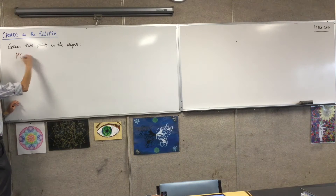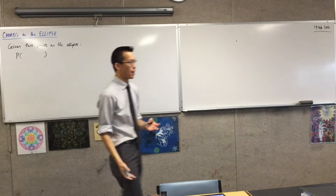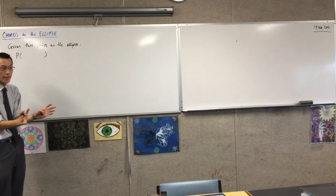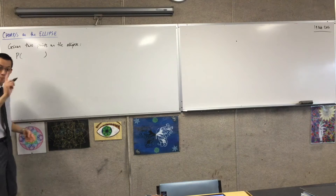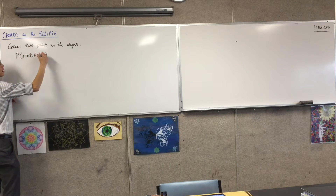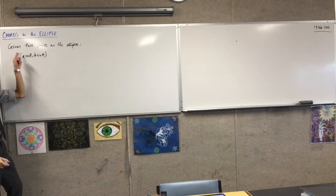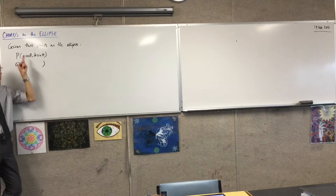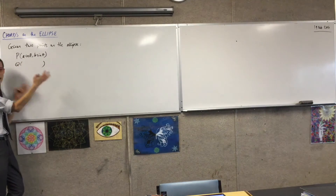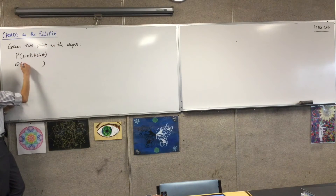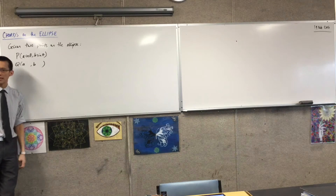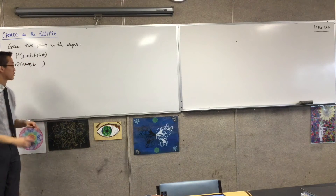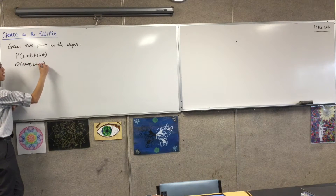We already have some parametric equations that make this quite easy to state. For any given point on the ellipse, in Cartesian terms I'd call them X and Y, but in parametric form I'd call them A cosθ and B sinθ. For a chord I need a second point Q. Nicely, A and B are still the same — I'm still on the same ellipse — but I want a different point, so I need a different angle. By convention, what comes after theta is phi, so Q is (A cosφ, B sinφ).